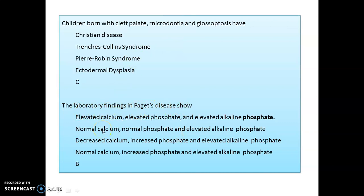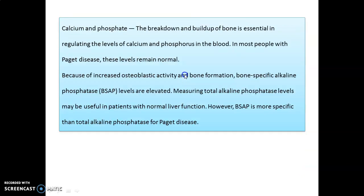The lab finding in Paget's disease shows normal calcium, normal phosphate, and elevated alkaline phosphatase. Since calcium and phosphate regulate the breakdown and build-up of bone, in most patients with Paget's disease these levels remain normal. However, due to increased osteoblastic activity, bone-specific alkaline phosphatase (BSAP) levels are elevated. Measuring total alkaline phosphatase may be useful in patients with normal liver function, but BSAP is more specific for Paget's disease.